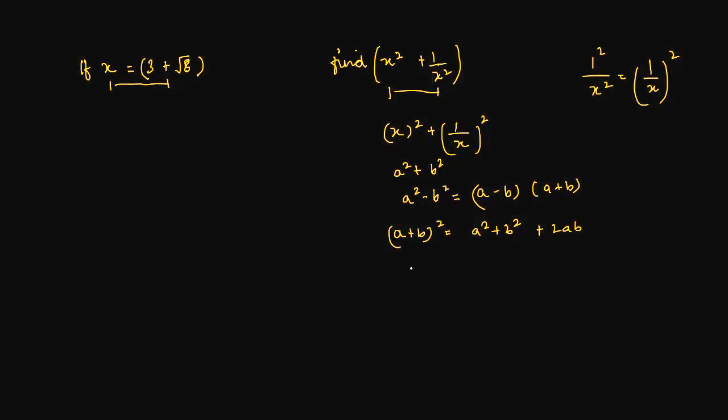So can we write this as x plus 1 upon x whole square is equal to x square plus 1 upon x square plus 2 into x into 1 upon x? Or simply, this x can cancel with this. So what we are left with is x square plus 1 upon x square plus 2.